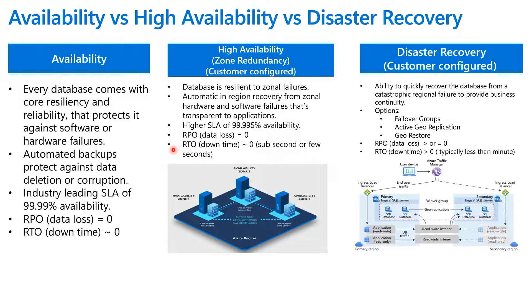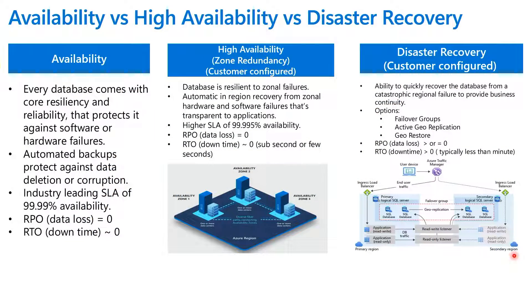Quickly touching upon the last pillar, which is disaster recovery. Again, this is customer-configured, and it's for redundancy across regions. Let's say you have deployments in East US and you want to make sure those deployments are redundant even if something goes wrong in the entire East US region. In that case, you would enable DR and use one of these options: either failover groups or geo-replication. Or at minimum, have geo-restore capability. The key difference here is RPO — the amount of data loss — which is definitely greater than zero depending on the workload, since it's asynchronous replication and there is latency between your primary and secondary. Recovery time objective — the downtime — is typically less than a minute. Most failovers complete within less than a minute. This picture shows the redundancy across regions: you have a primary region and then your secondary regions.